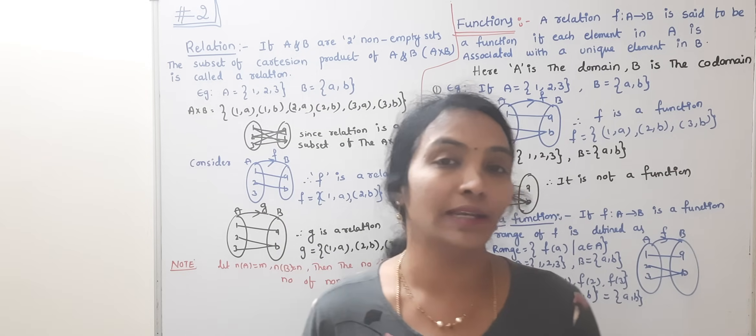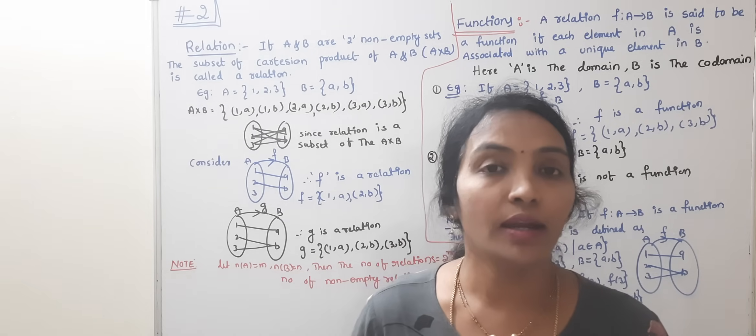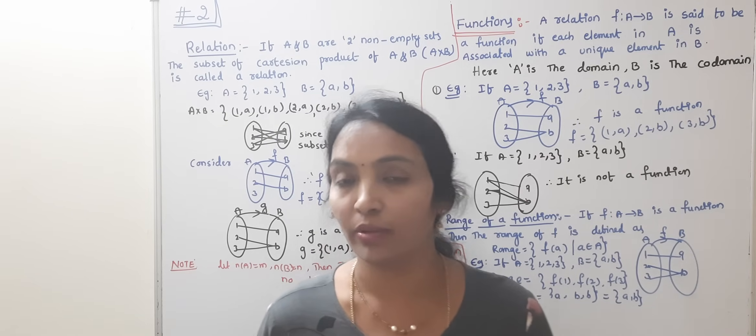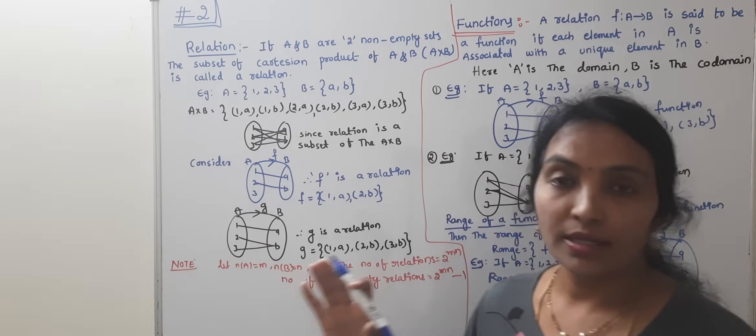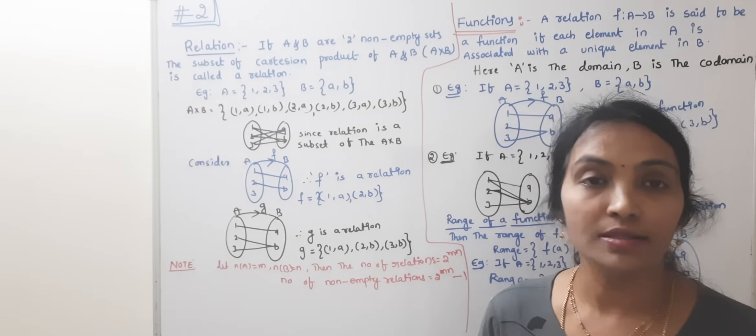We already discussed our first class in sets and relations. This is the second lecture. In the first class, we covered different types of sets and Cartesian product. Now, we are going to discuss relations.